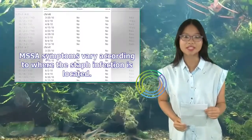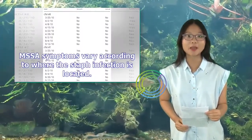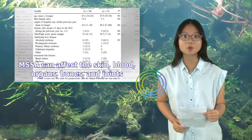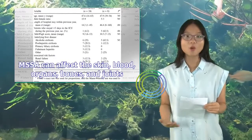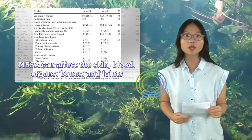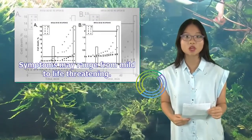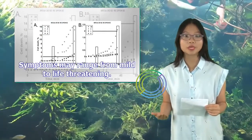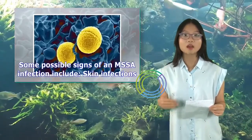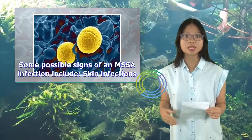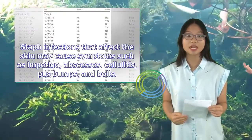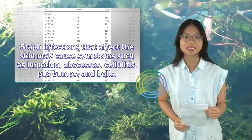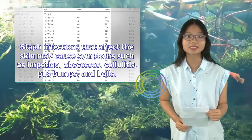What are the symptoms? MSSA symptoms vary according to where the staph infection is located. MSSA can affect the skin, blood, organs, bones, and joints. Symptoms may range from mild to life-threatening. Some possible signs of an MSSA infection include skin infections. Staph infections that affect the skin may cause symptoms such as impetigo, abscesses, cellulitis, pus bumps, and boils.